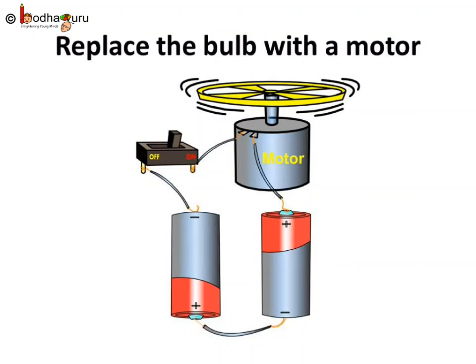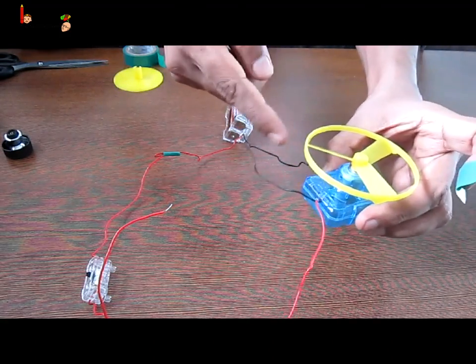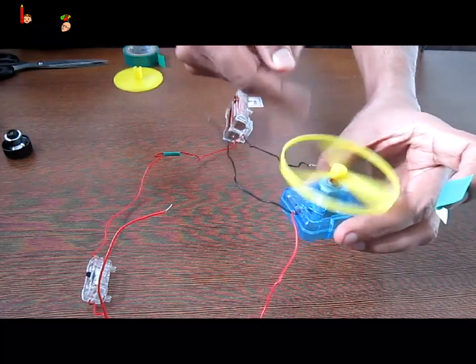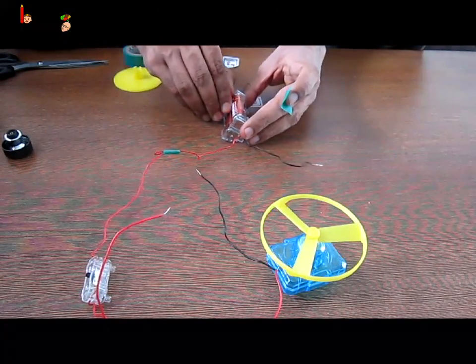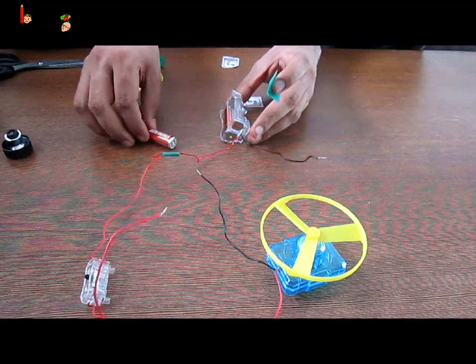So for fun, let's connect another appliance to this circuit. Now instead of a bulb, I will connect a small motor which has a fan or a circular ring on top of it.